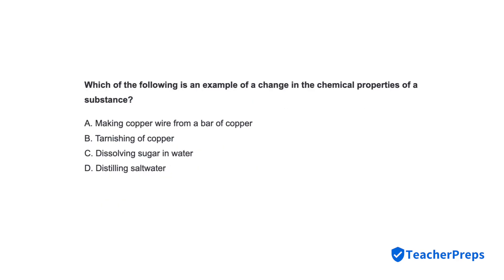Which of the following is an example of a change in the chemical properties of a substance? Correct response: Letter B — tarnishing of copper.